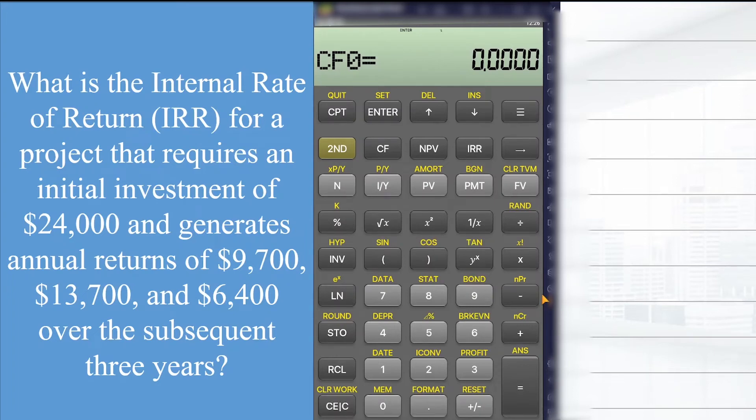What is the internal rate of return for a project that requires an initial investment of $24,000 and generates annual returns of $9,700, $13,700, and $6,400 over the subsequent three years?